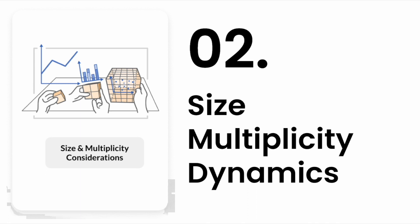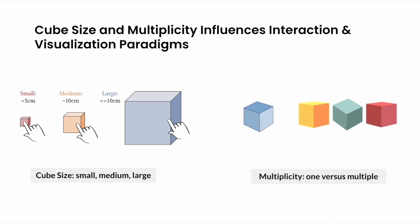Based on our review of prior works, we have identified several design considerations on the size and multiplicity of tangible cubes. For size, we found three main categories. Small cubes are around 5 cm or smaller. They are easy to handle and move around. Then, there are medium cubes, about the size of a Rubik's cube. You can hold them in one hand, but you'll likely need your other hand to help manipulate them. Large cubes with edge lengths greater than 10 cm are meant to stay in place and observed stationarily.